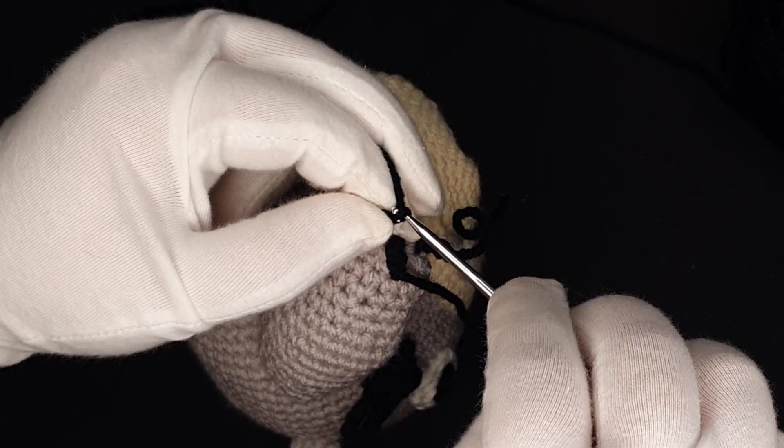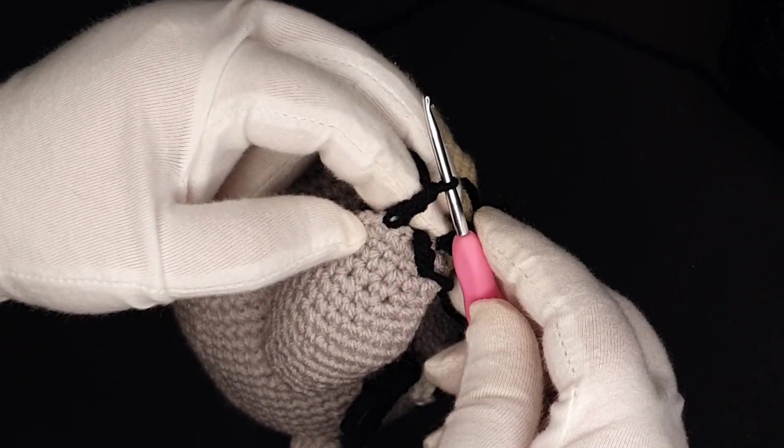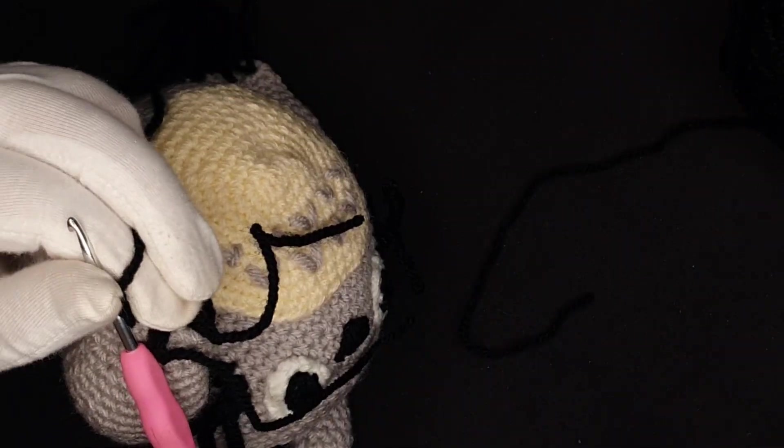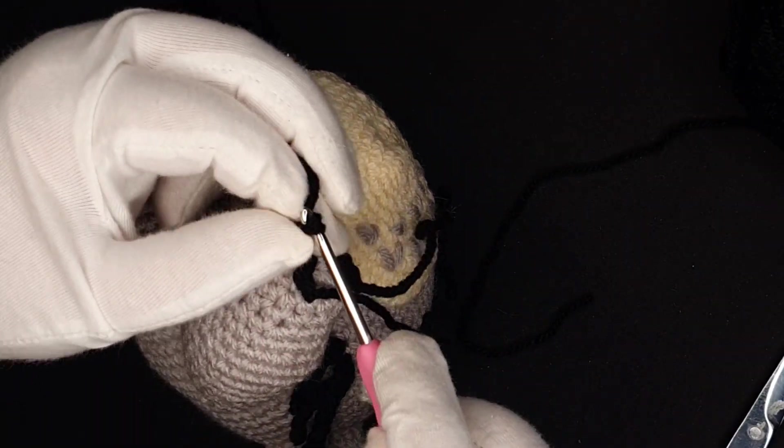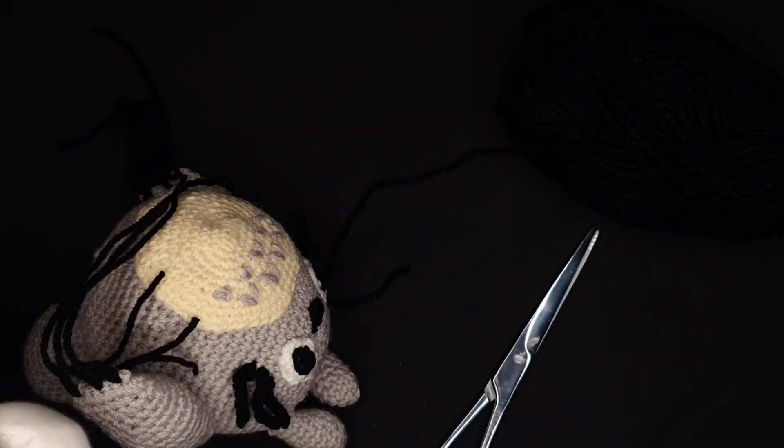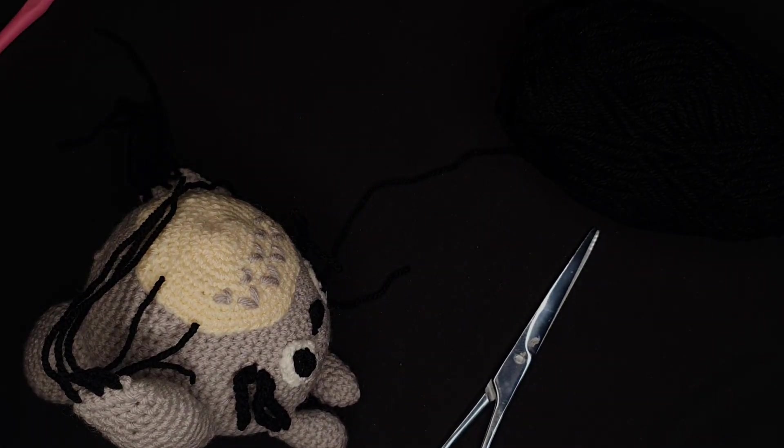One of the final details are the claws. I made these by picking up one stitch, chaining three, and then fastening off. The weaving in of the claw tail ends took forever. I mean, six times six is a lot apparently. Maths not thing do now.